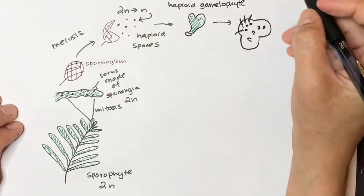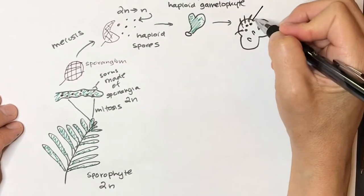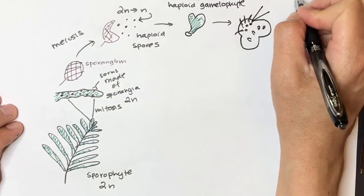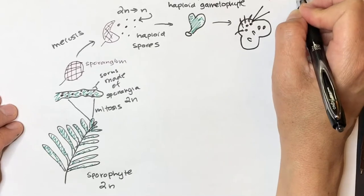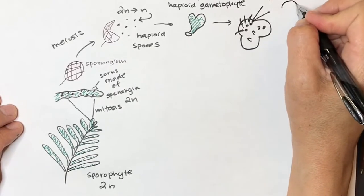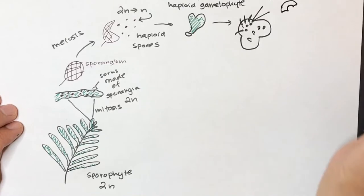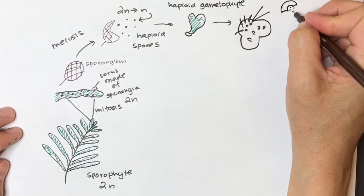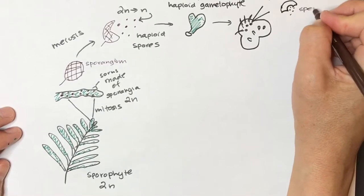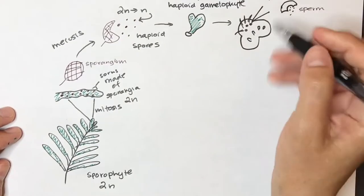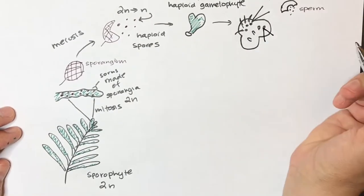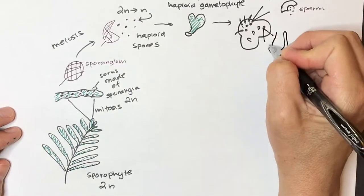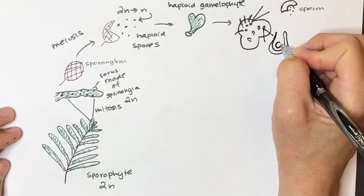And these little blebs are going to be either the anthridia, that's the male reproductive tissue, anthridia. And those are going to produce sperm by mitosis. Or they're going to be archegonia, which produce eggs by mitosis.